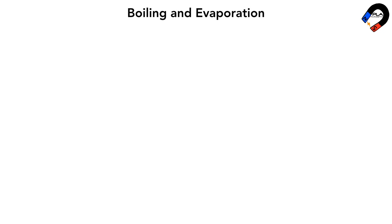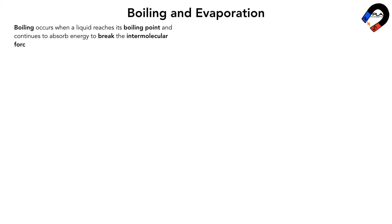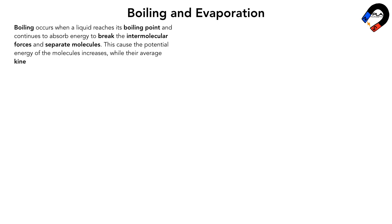Boiling occurs when a liquid reaches its boiling point and continues to absorb energy to break the intermolecular forces and separate molecules. This causes the potential energy of the molecules to increase while the average kinetic energy remains constant, and temperature also remains constant.